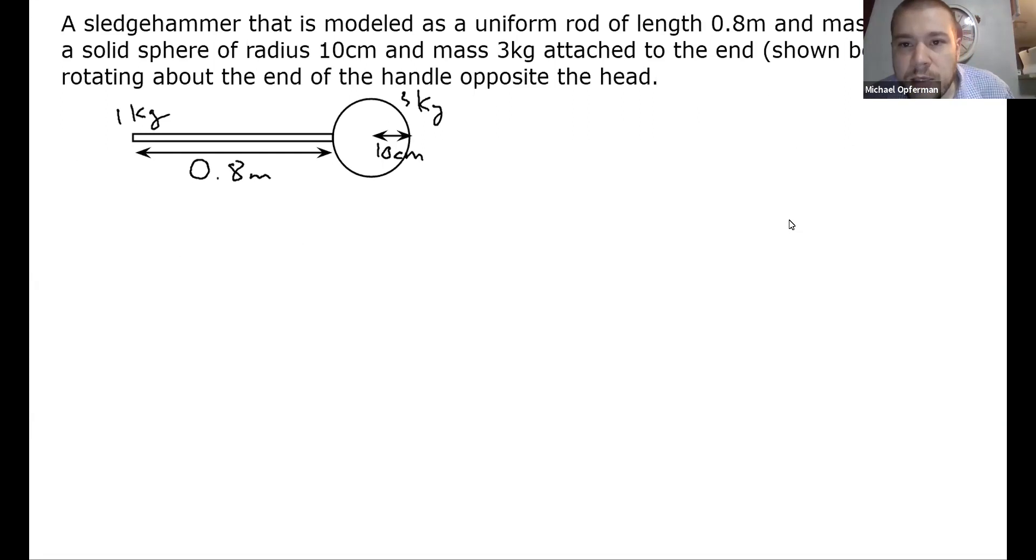The model we're going to use is a big, long sledgehammer, a huge sledgehammer. In our case, we'll assume that it has a handle which is 0.8 meters in length and one kilogram in mass. And at the end of this, we'll take the head of the hammer to be a solid sphere, just for the sake of having a simple shape we can work with. And we'll say that that's 10 centimeters in radius and three kilograms in mass. And it's going to be rotating about the handle, like this way.